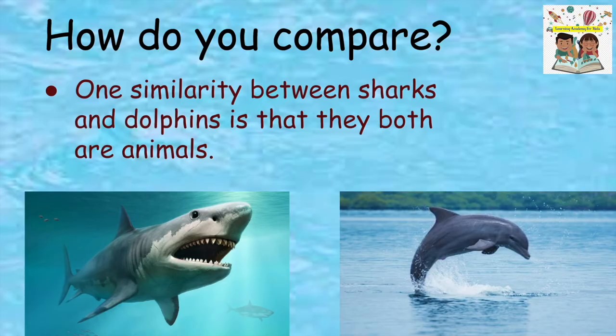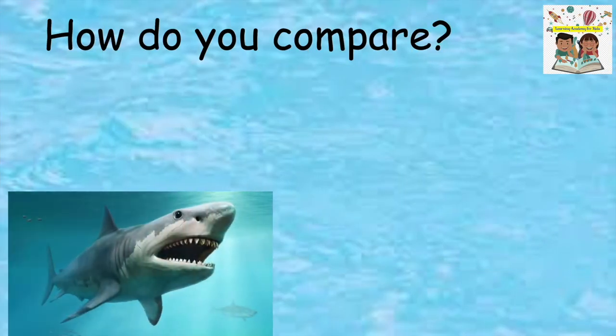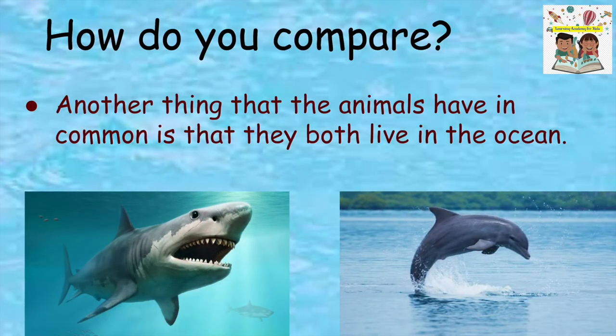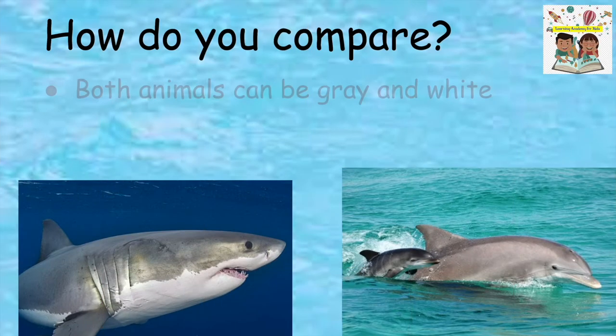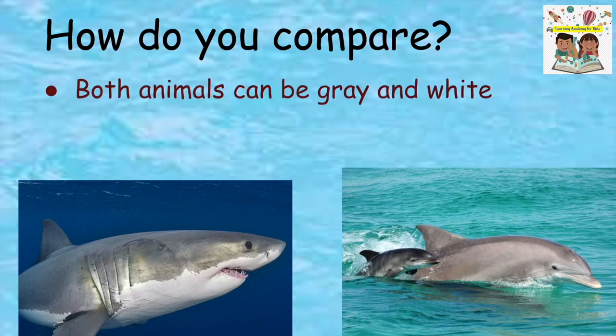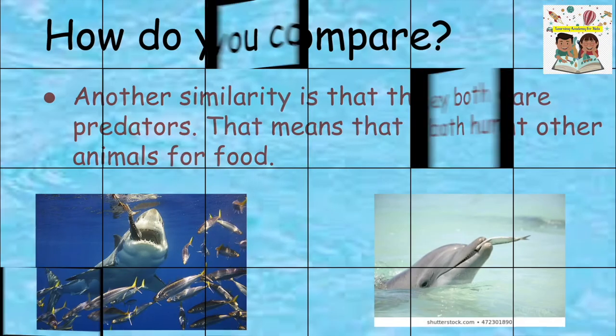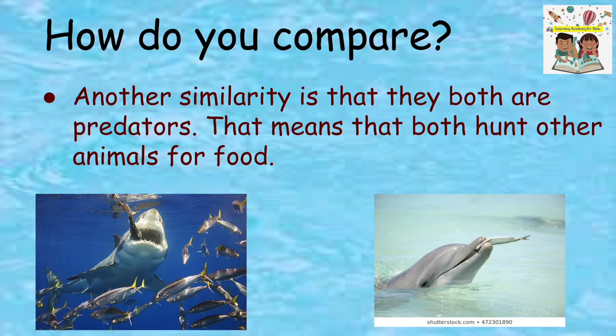One similarity between sharks and dolphins is that they both are animals. Another thing that the animals have in common is that they both live in the ocean. Both animals can be gray and white. Another similarity is that they both are predators — that means that both hunt other animals for food.